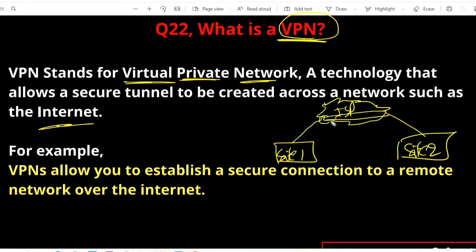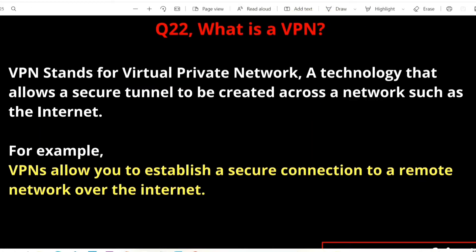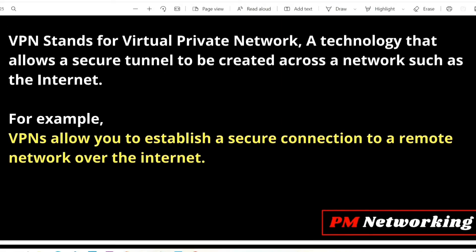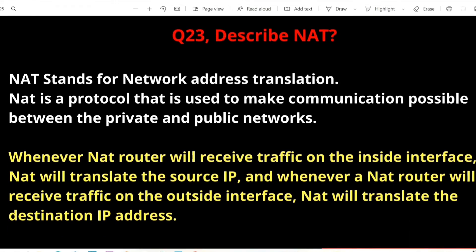With VPN we can create a tunnel and use that tunnel to create a virtual private network. So creating a virtual private network over a public network is known as VPN. You can also say VPN is an extended private network — we are extending our private network over the public network. A VPN allows you to establish a secure connection to a remote network over the internet.